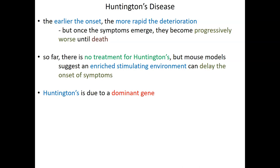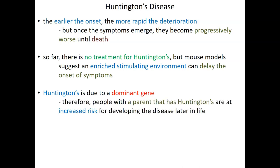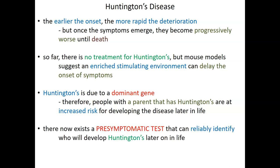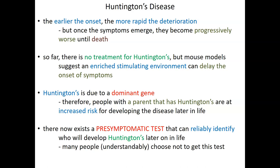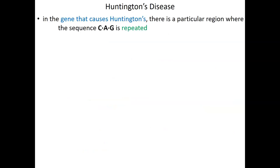Huntington's is a dominant disorder, so you need only one mutant allele to have the disease. People with Huntington's parents are at significantly increased risk — even if that parent is heterozygous, there's a 50% chance that mutant allele was inherited. There now exists a pre-symptomatic test that can spot that mutant allele and reliably diagnose the risk of Huntington's prior to any symptoms. However, many people with Huntington's parents choose not to get this test, preferring not to know.